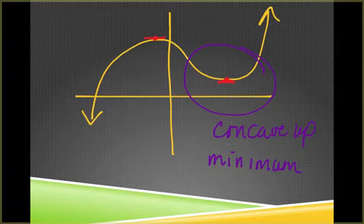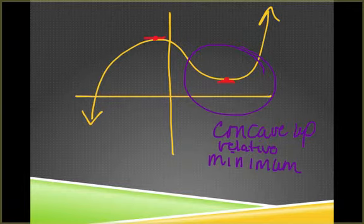Okay, so that's why we have a relative or a local minimum at that point because we've got a critical point and our graph was concave up, so that had to be our local minimum.